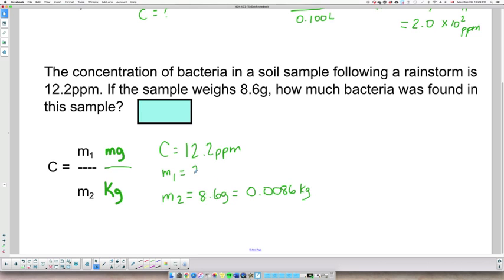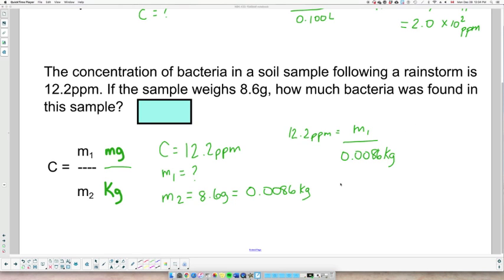And I'm looking for the amount of bacteria, so the amount of solute in the entire sample. C equals 12.2 ppm equals M1 over 0.0086 kilograms. So this gives me a mass of 0.1049 milligrams.